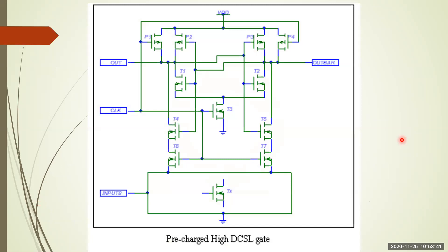This is one example of a pre-charge high DCSL circuit. Both PMOS transistors are connected in parallel here, similar to the earlier circuit. The drain of each PMOS is connected to the structure below, with NMOS transistors at the bottom — one N-transistor block uses complementary input values and the other uses true input values.